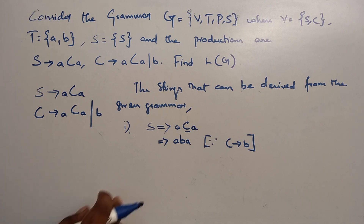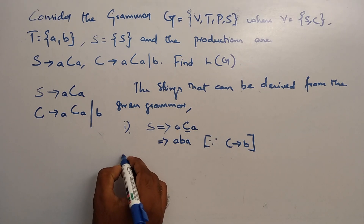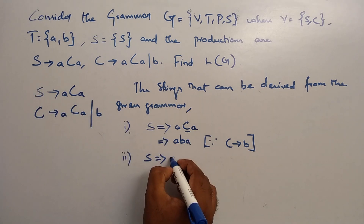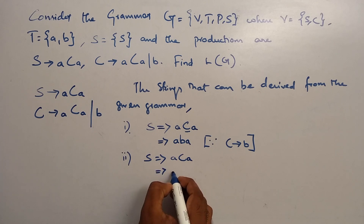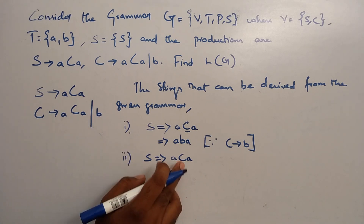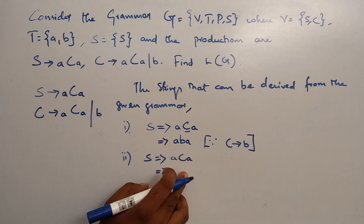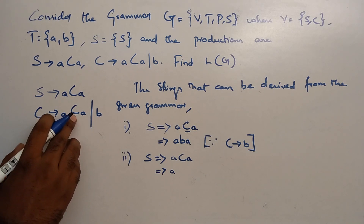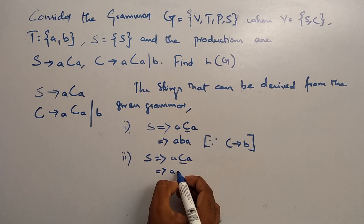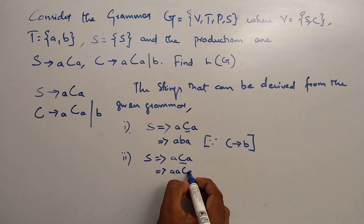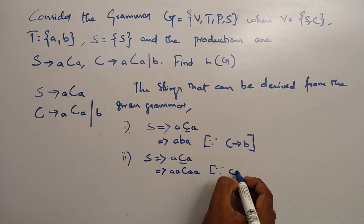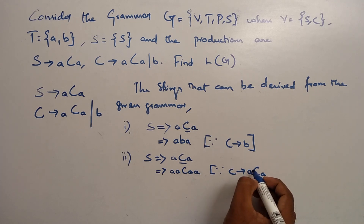Next, we try to derive a longer string. Starting again with A C A, if C is replaced with A C A instead of B, we get A, A C A, A. Then replacing that C with B, we close and get A A B A A. So the second string is AABAA.